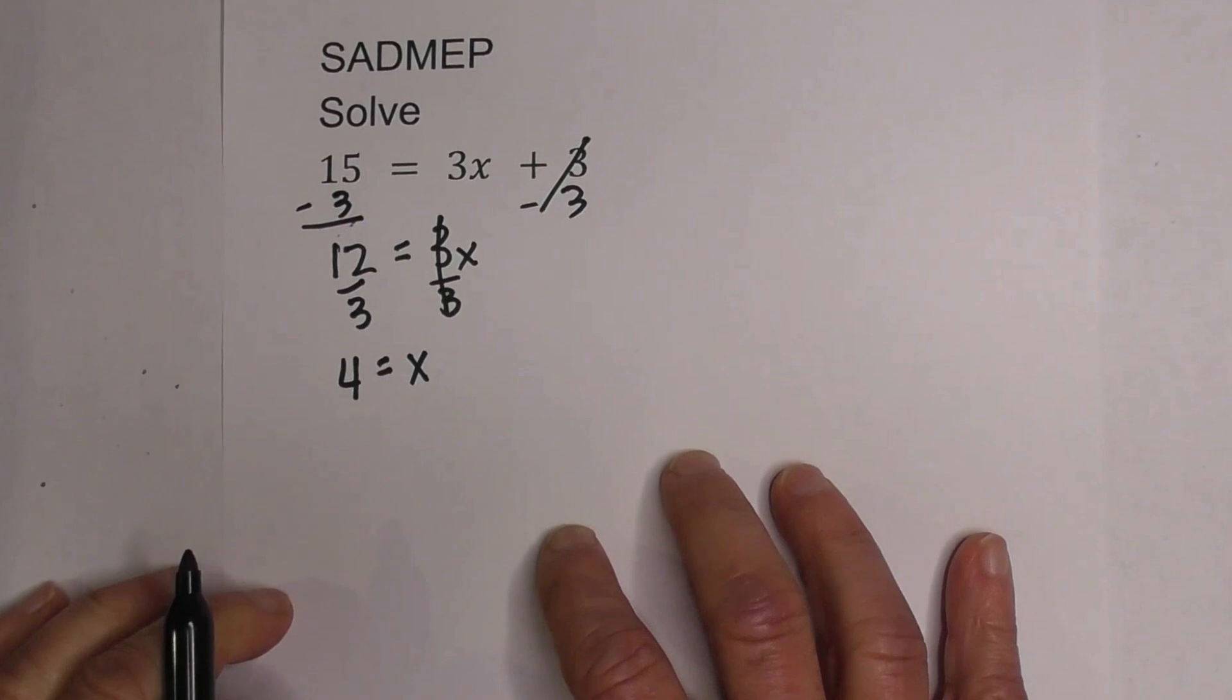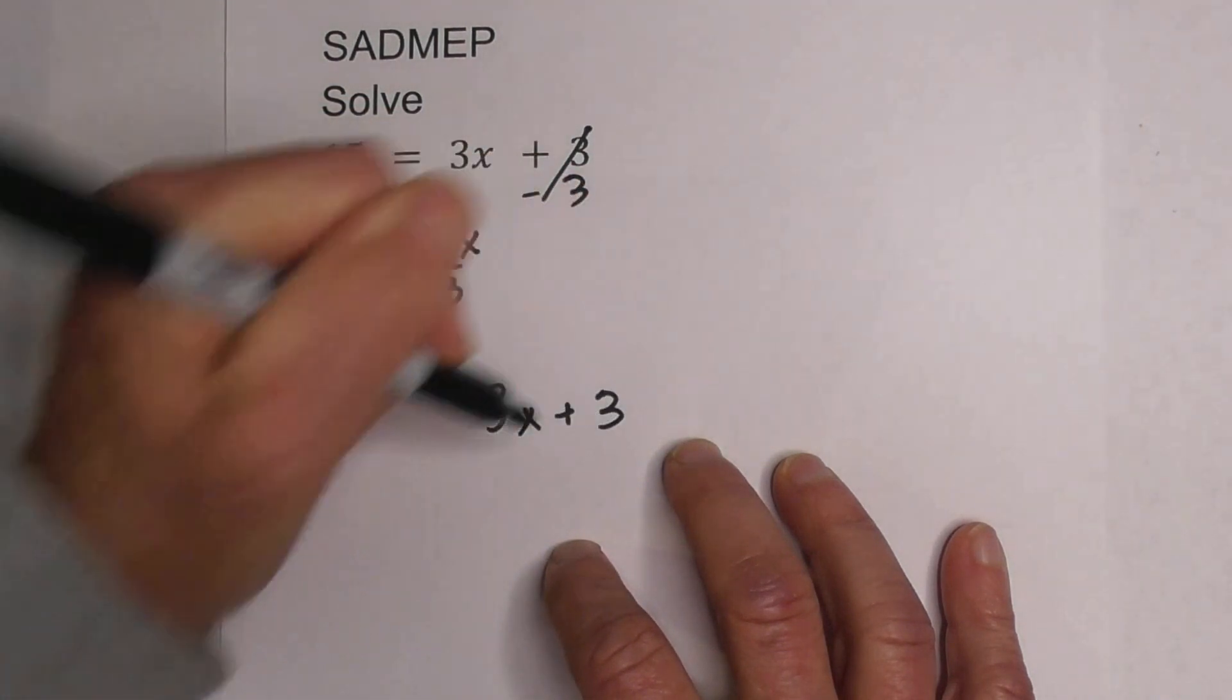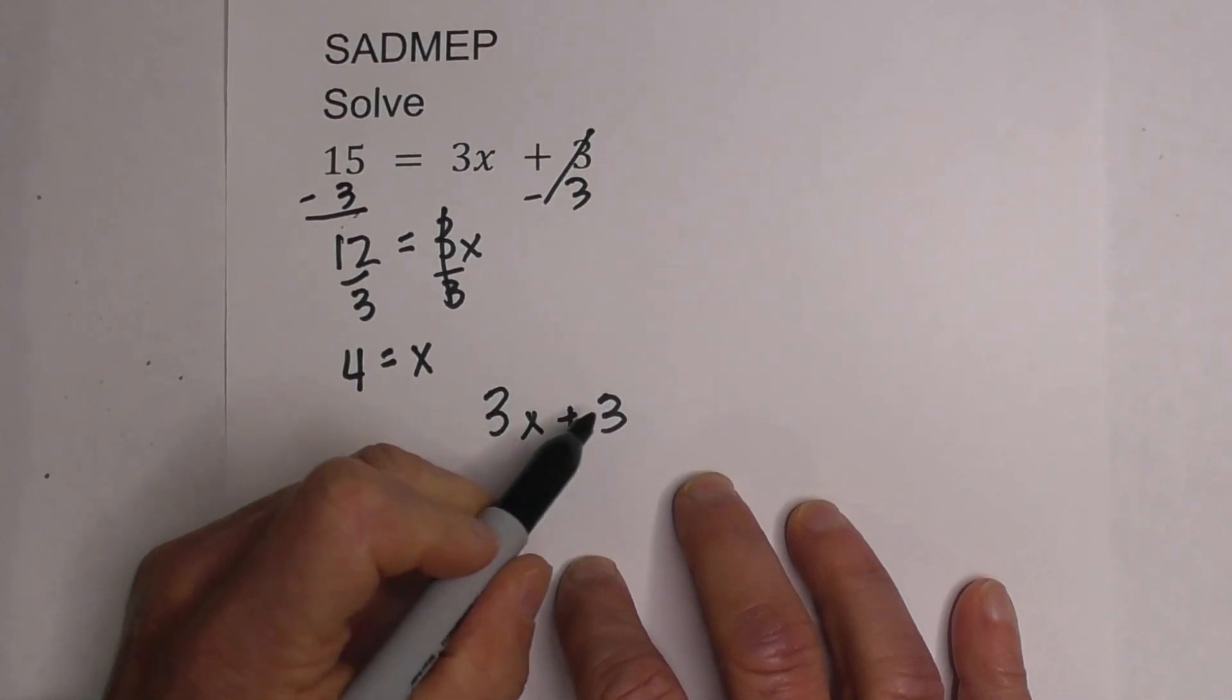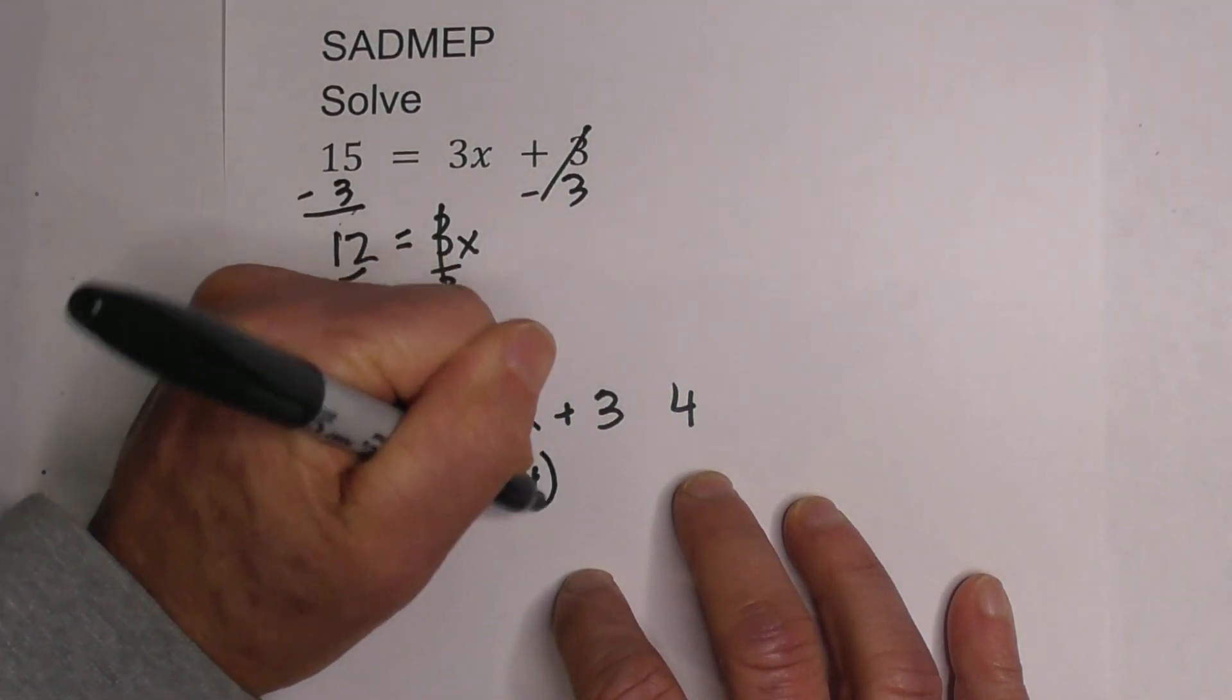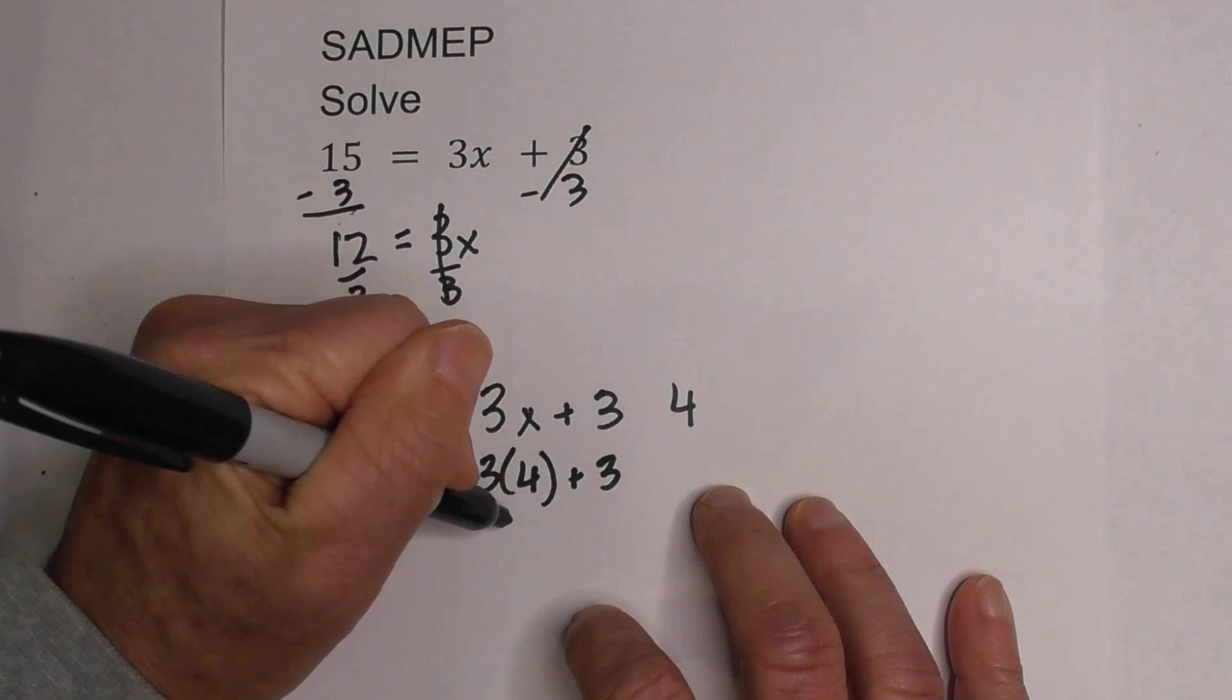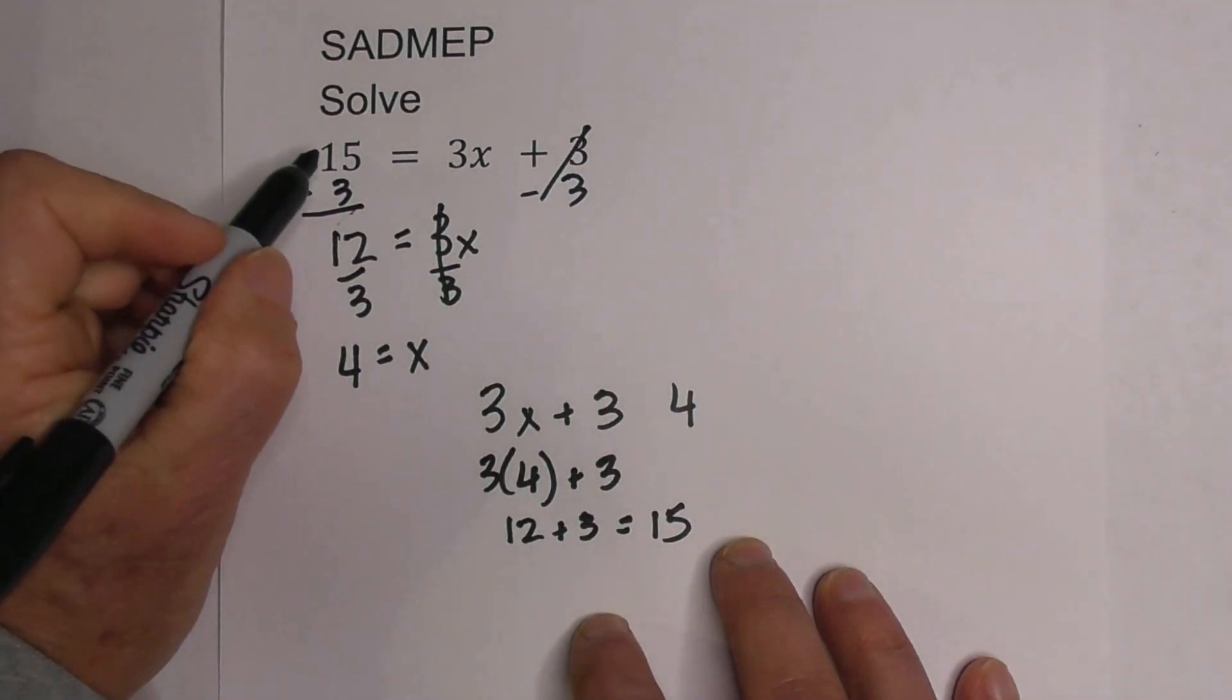So x is equal to 4. Now, let's plug this into the expression 3x plus 3 and evaluate it and see if it does equal 15. So now I'm back to PEMDAS because I have an expression, and I'm going to evaluate it with x as 4. I'm going to work left to right. So I'm going to start with multiplication to division. So we have 12 plus 3. Then I'm going to add, and that does indeed equal 15, which we were looking for.